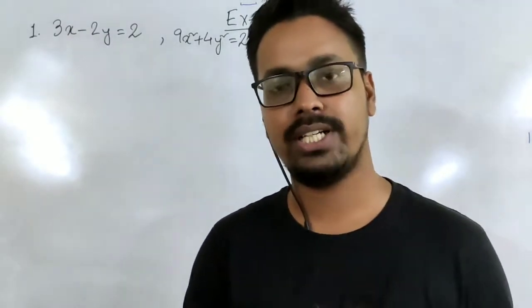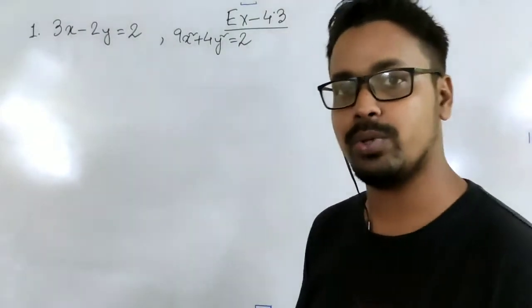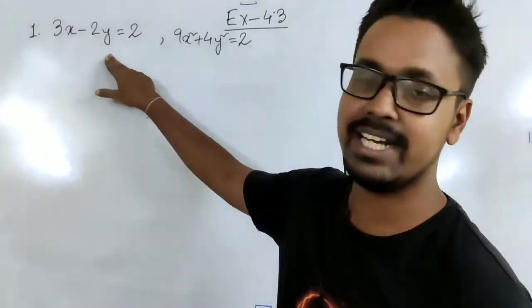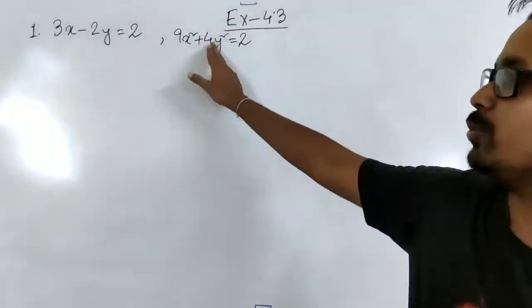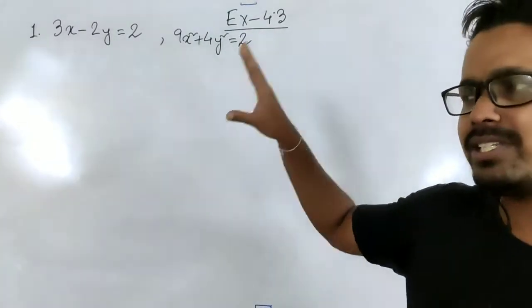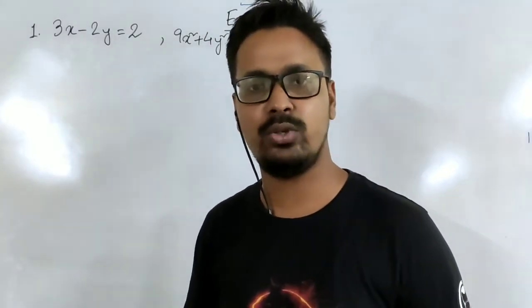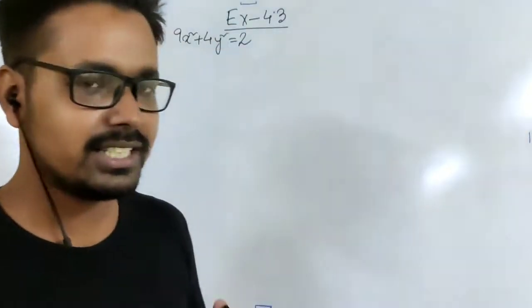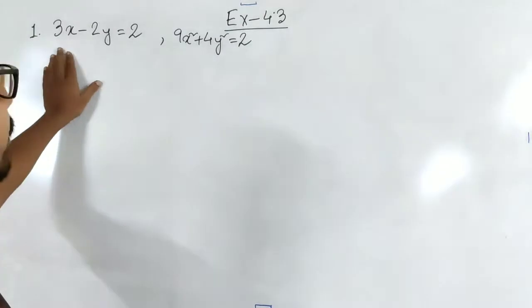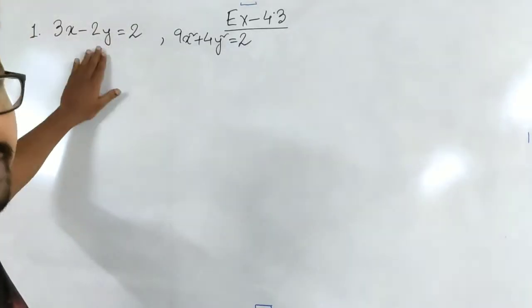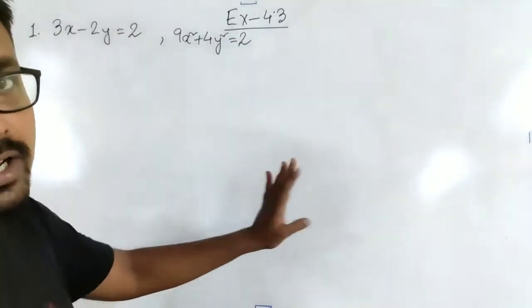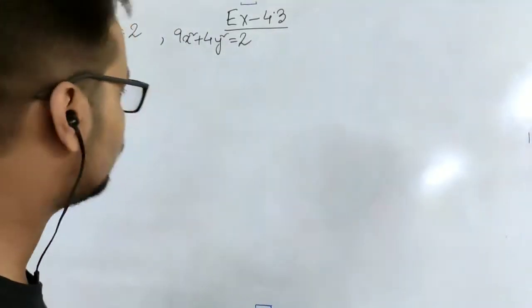This exercise is about solving quadratic equations and we will have two equations — simultaneous equations where one is a linear equation and the other is a quadratic equation, with two variables. Since we have one linear equation, from here we can find either x or y in terms of the other one, and then put that value into the quadratic equation and solve. Let's see how to solve this.